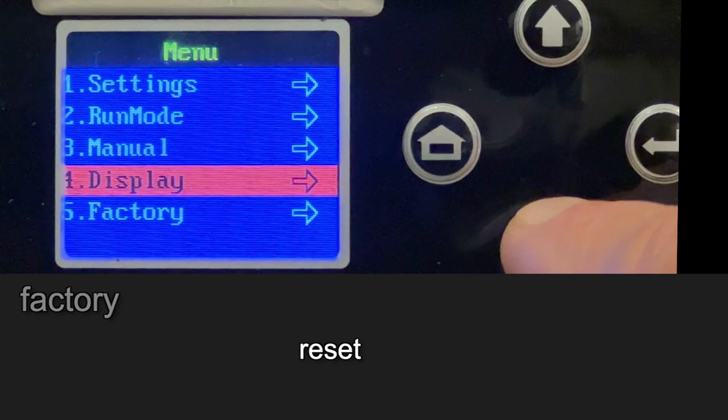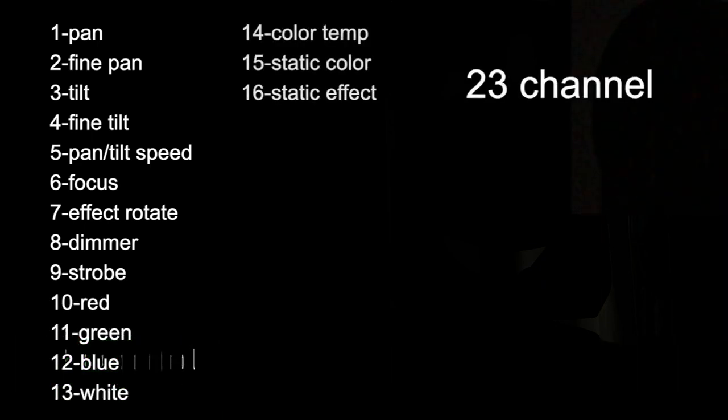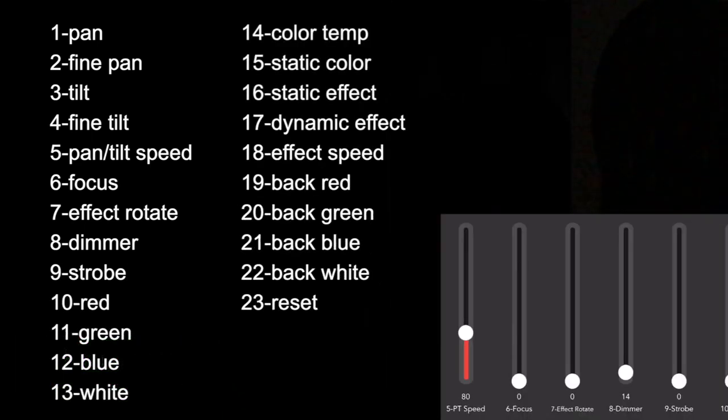And then finally there's a page with factory reset functions. Let's go through the DMX channels. I've got this thing in 23 channel mode. For this to make sense I have to go through the channels out of order.